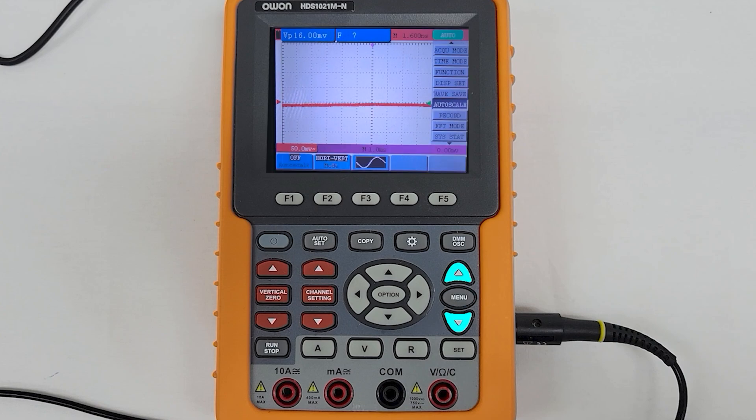Press the menu button, then scroll until CH setup is selected. Press the F1 button until coupling is set to AC. Press the F2 button until channel is set to on. Press the F3 button until probe is set to match the probe switch setting. Press the F4 button until inverted is set to off.